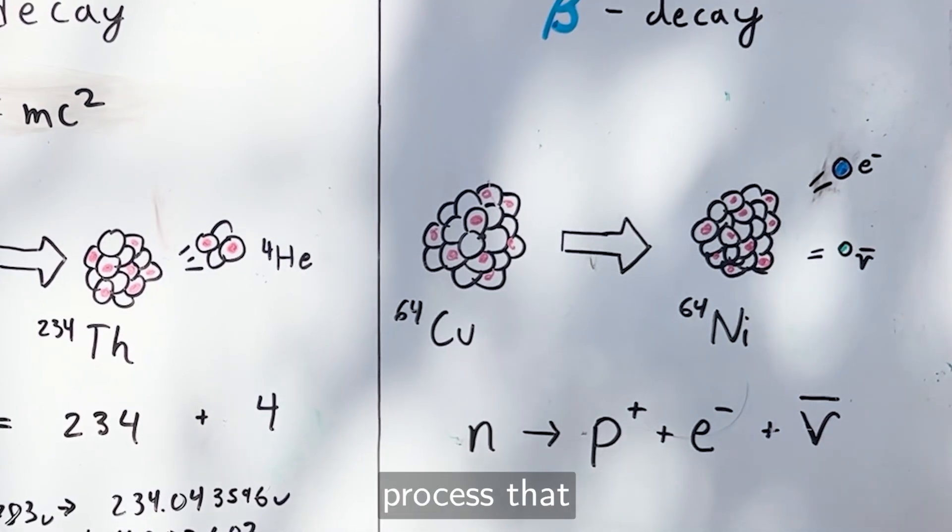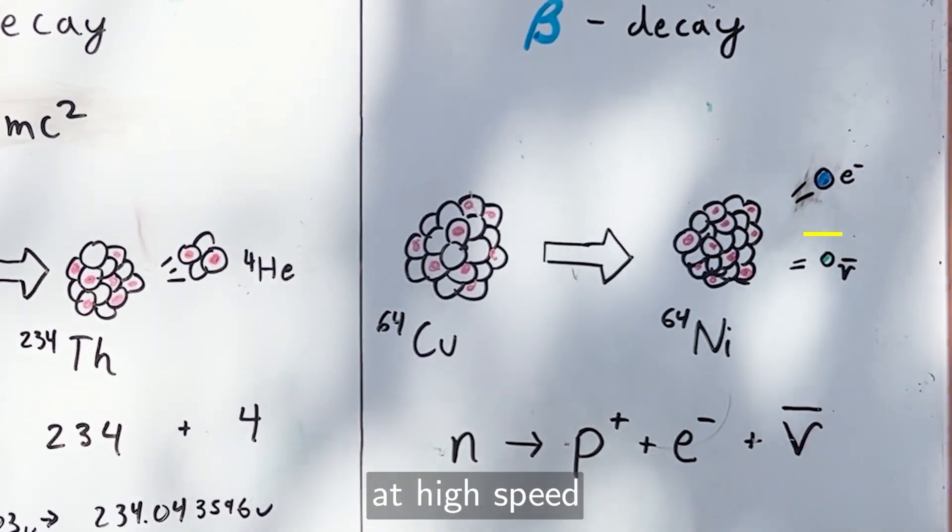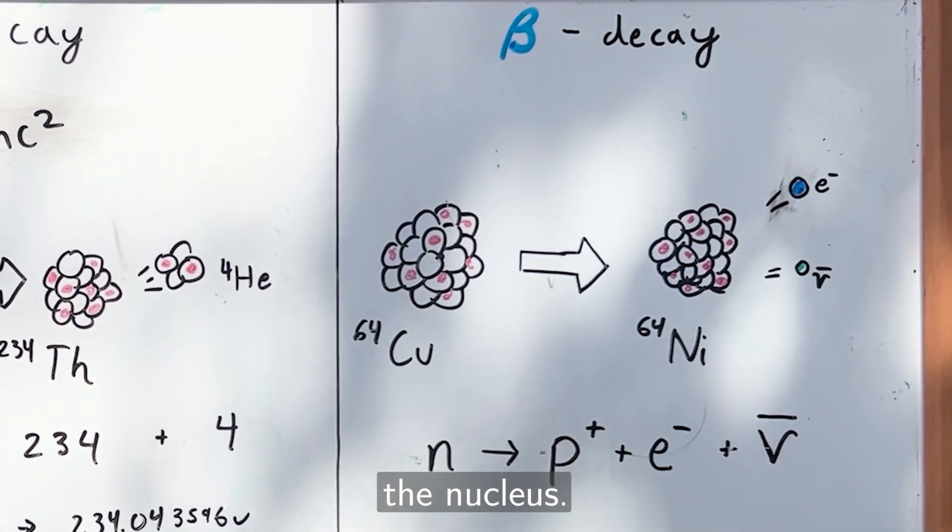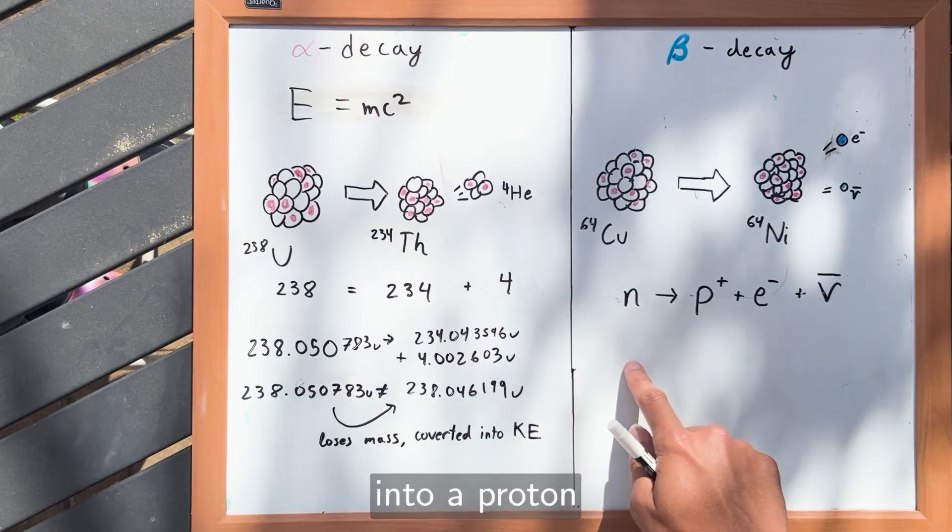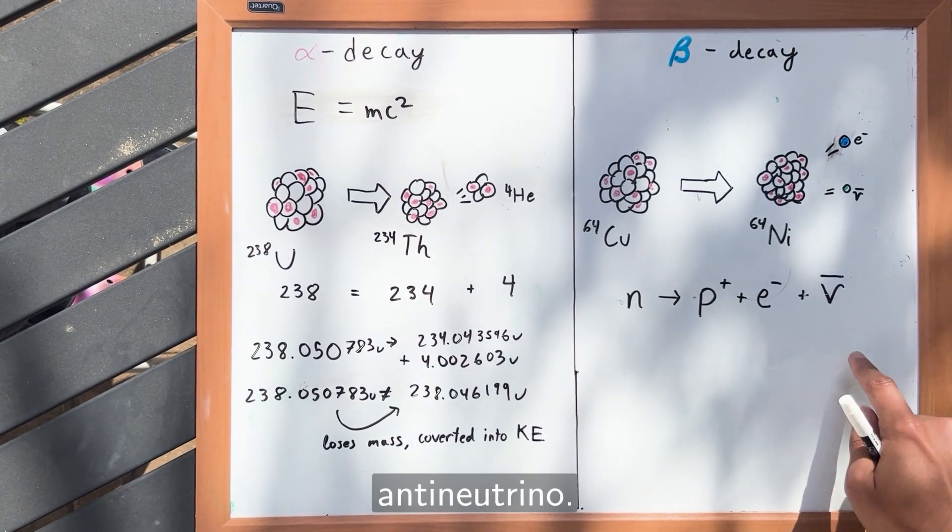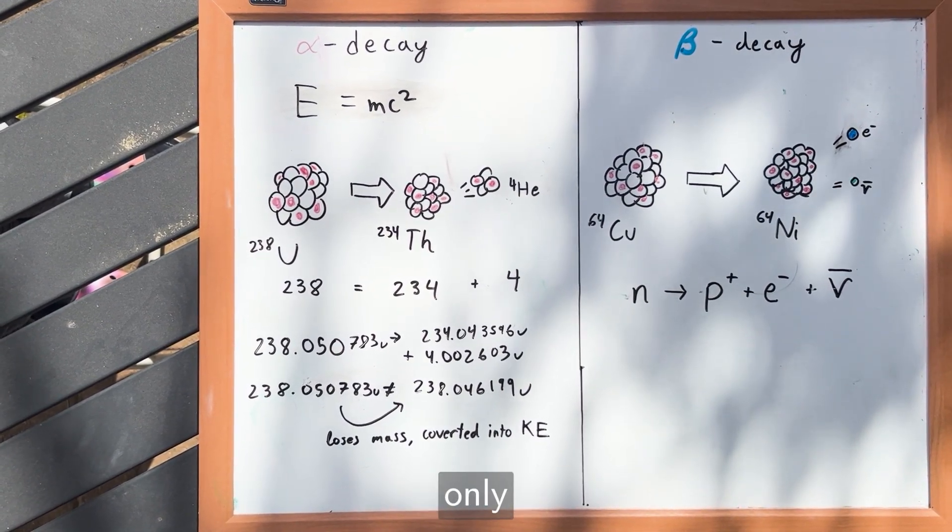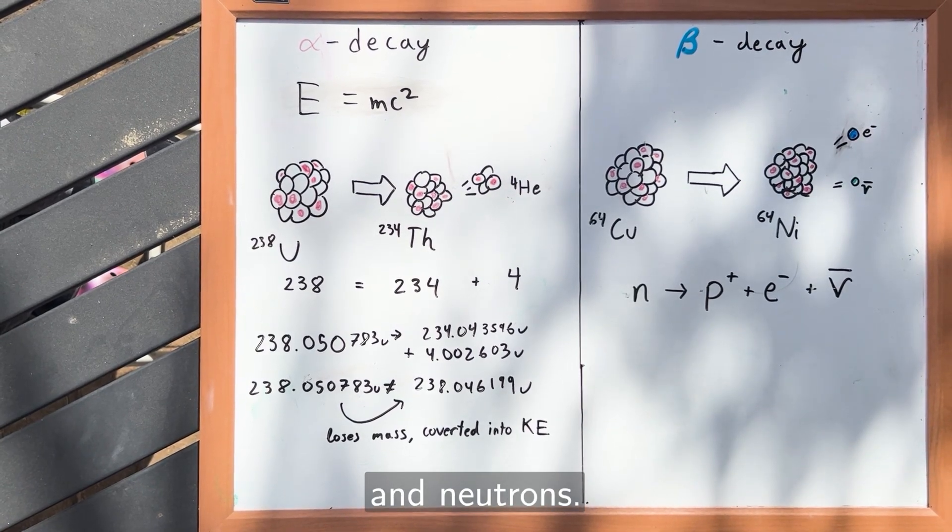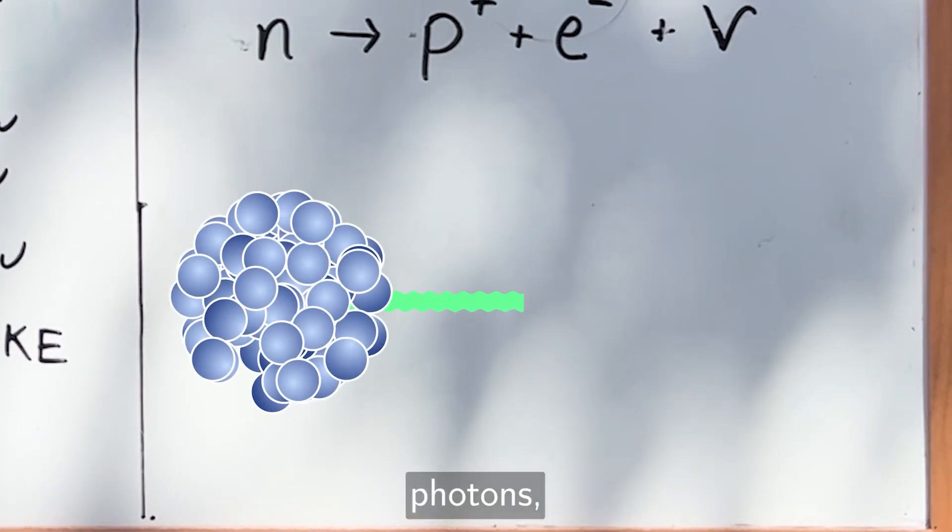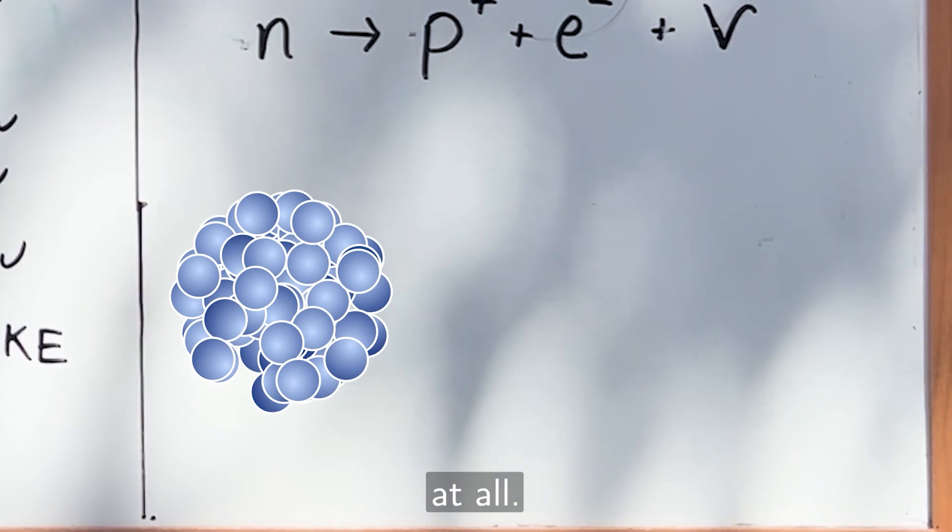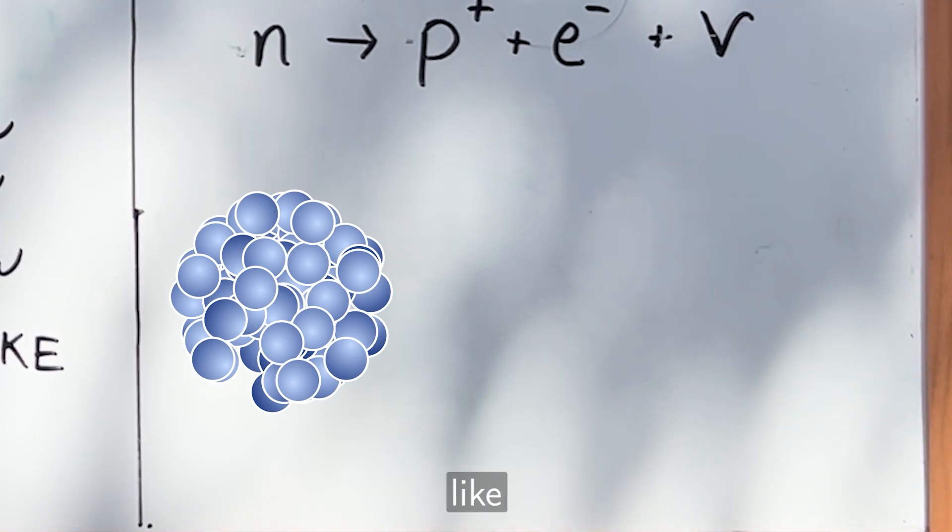Beta decay is a process that ejects an electron at high speed out of the nucleus. Beta decay turns a neutron into a proton, electron, and antineutrino. It might be unusual that a nucleus can emit an electron, despite only containing protons and neutrons, but atoms can also emit photons, and photons aren't part of atoms at all. Instead, they're created with energy, like electrons.